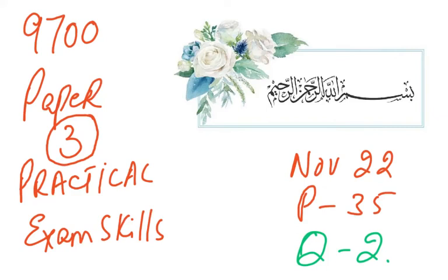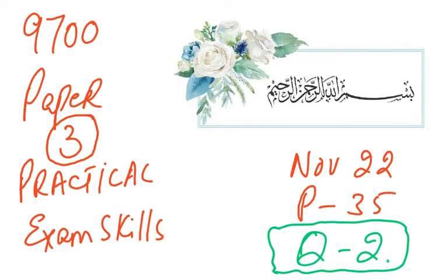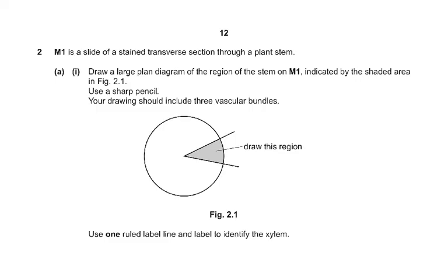Bismillahirrahmanirrahim. This is Paper 3 practical skills, and we're going to discuss question number two. Cambridge will send a slide — in this case M1 — which is a slide of a stained transverse section through a plant stem. Draw a large plan drawing of the diagram of the region of the stem on M1 indicated by the shaded area in figure 2.1, using a sharp pencil. Your drawing should include three vascular bundles.